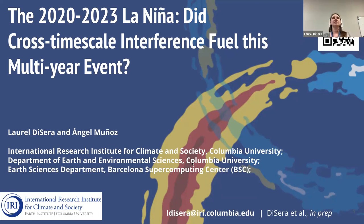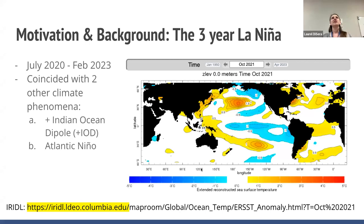The talk is titled: 'Did cross-time scale interference fuel the three-year-long La Niña?' We were in a La Niña event from July 2020 through the end of February 2023, and either within or before that, there were two other coinciding climate phenomena: specifically a positive Indian Ocean Dipole event, or positive IOD, and an Atlantic Niño.